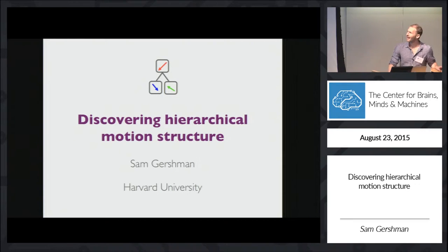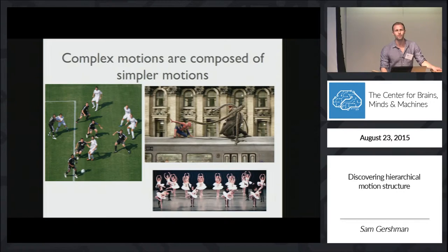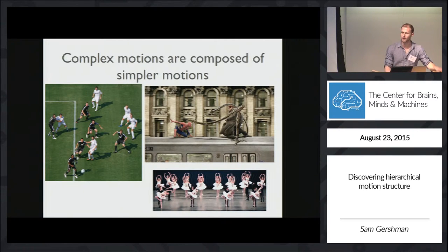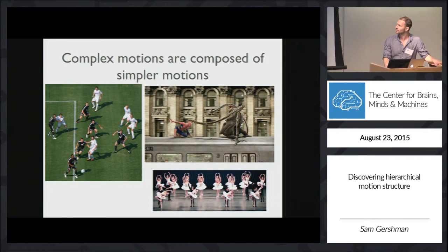How does the brain deal with the enormous complexity of dynamic scenes? I'd like to propose a partial answer, which is essentially a form of divide and conquer: the brain takes advantage of the hierarchical structure underlying many different scenes, and specifically that complex motions are often composed of simpler motions.